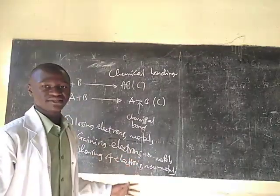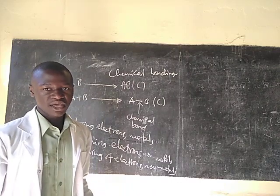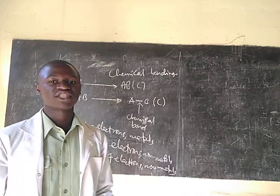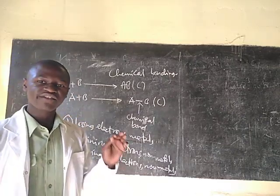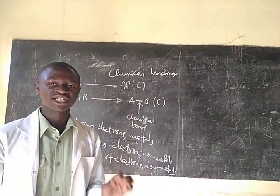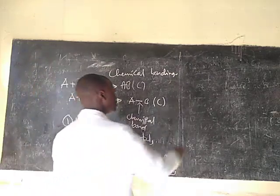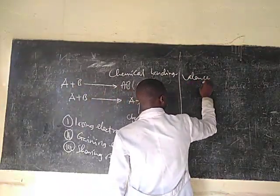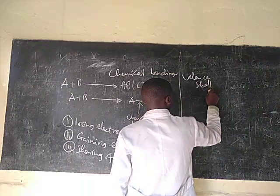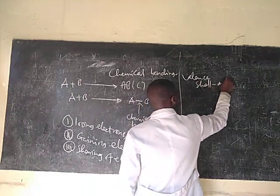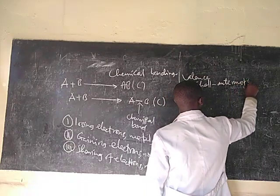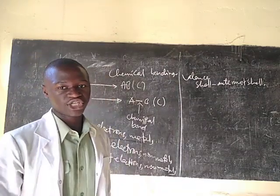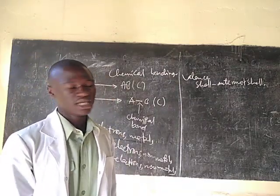In bonding you must remember and know about the concept of the valence shell, because if you don't know about the valence shell it will be very difficult to understand most things in chemical bonding. When we say valence shell, what is it? Simply, the valence shell is the outermost shell. For any given element, the valence shell is simply the outermost shell.